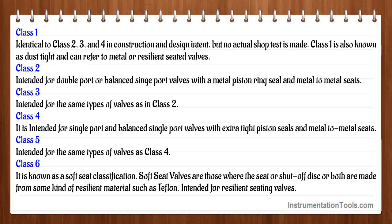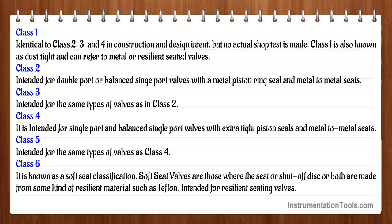Class 2 is intended for double port or balanced single port valves with a metal piston ring seal in metal-to-metal seats. Class 3 is intended for the same types of valves as Class 2. Class 4 is intended for single port and balanced single port valves with extra tight piston seals in metal-to-metal seats. Class 5 is intended for the same types of valves as Class 4. Class 6 is known as a soft seat classification — soft seat valves are those where the seat, shut-off disc, or both are made from resilient material such as Teflon, intended for resilient seating valves.